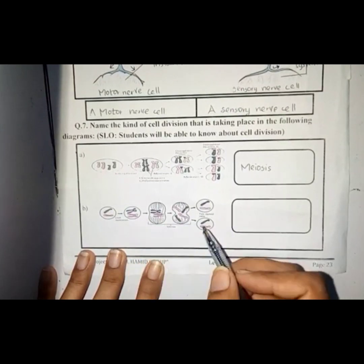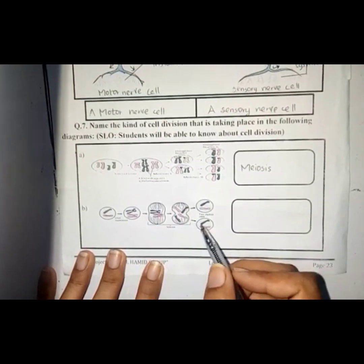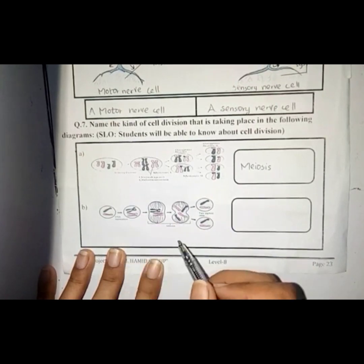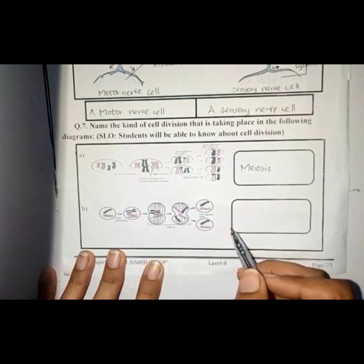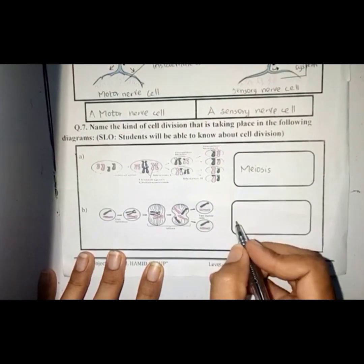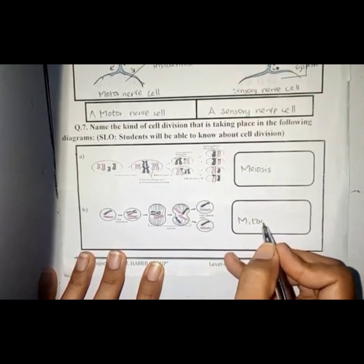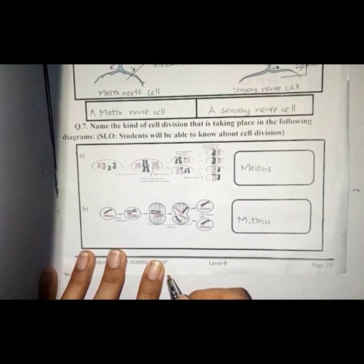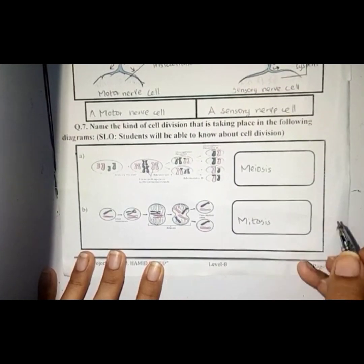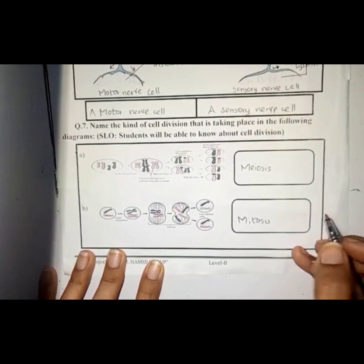The cell from which we have started mitosis will be the same as the cells that are produced at the end of mitosis. So this is mitosis, which is a kind of cell division. We write here: mitosis.